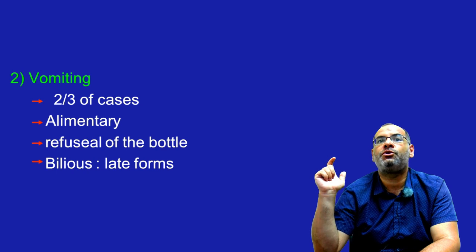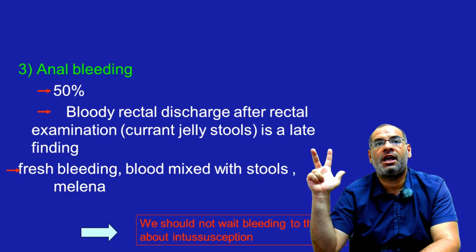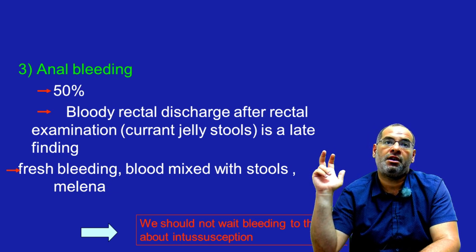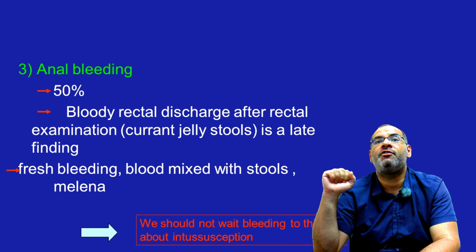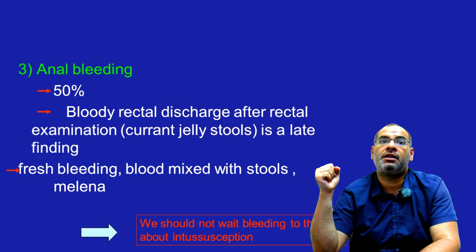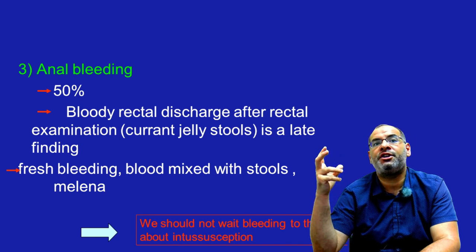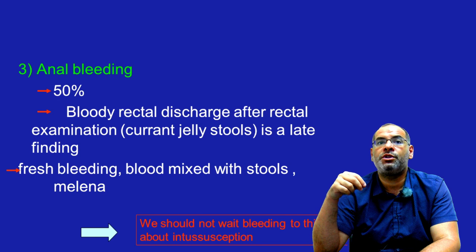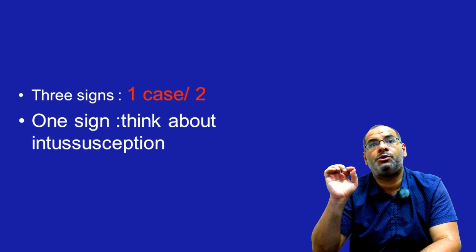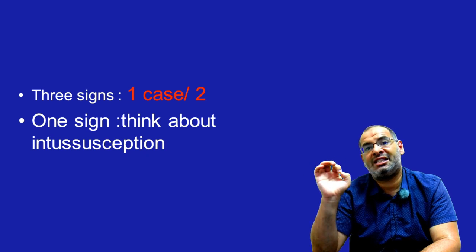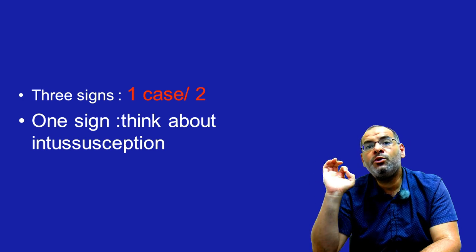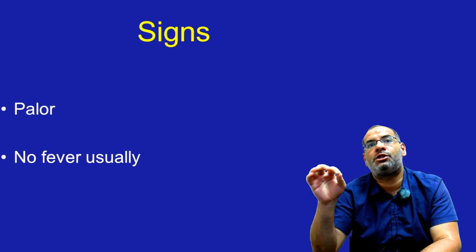We can also have refusal of the bottle. The third sign is anal bleeding, seen in 50% of cases, with bloody rectal discharge after rectal examination and currant jelly stools, which can be a late finding. We can have fresh bleeding, blood mixed with stools, or melena. We should not wait for bleeding to think about intussusception, because all three signs are associated in only one out of two cases. So when we have only one sign, think about intussusception.